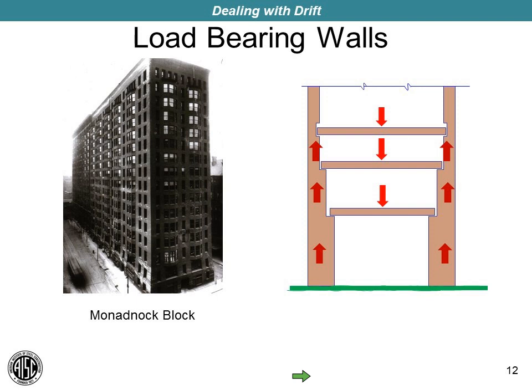In bearing wall buildings, the facade is the structure and the structure is the facade. The facade has to support the weight of the floors inside of it, as well as its own weight, and transmit those down to the foundations. In addition to taking the gravity loads, the facade is quite frequently the lateral load-resisting system of the building. The Monadnock Block was constructed in two stages: the northern half from 1889 to 1891 and the south half from 1891 to 1893.